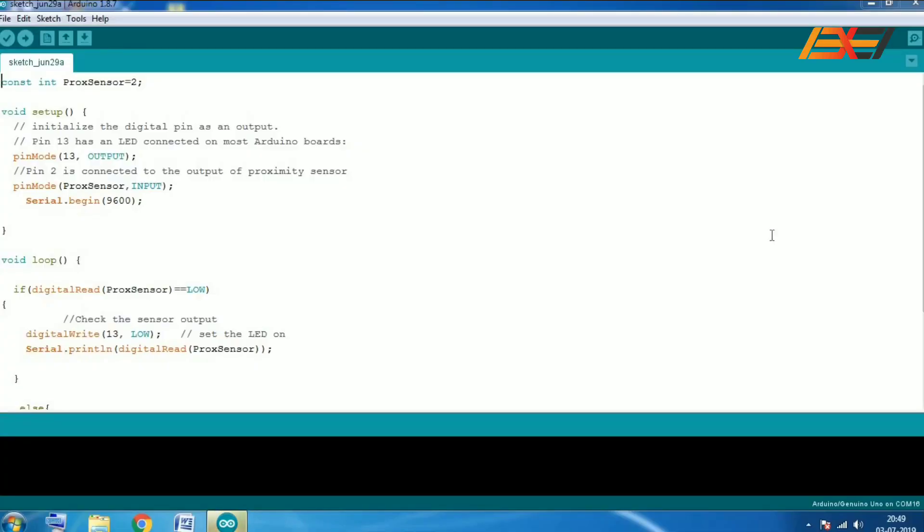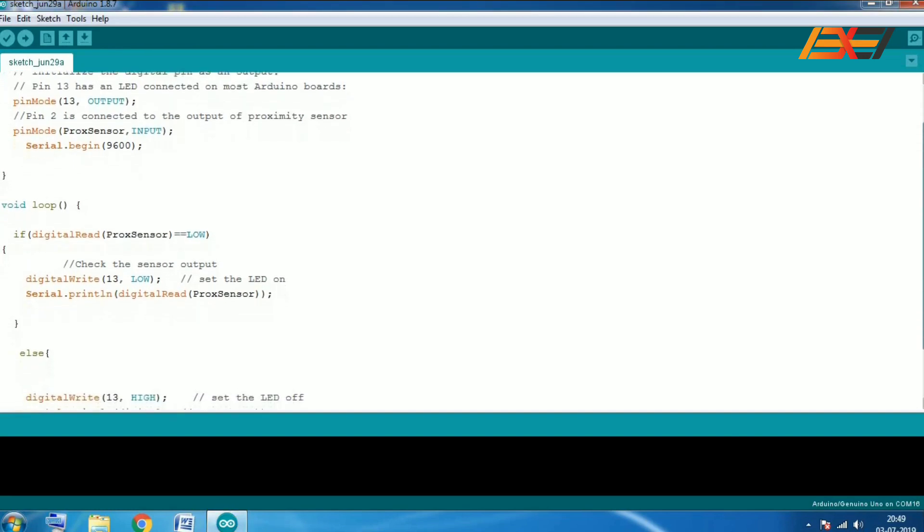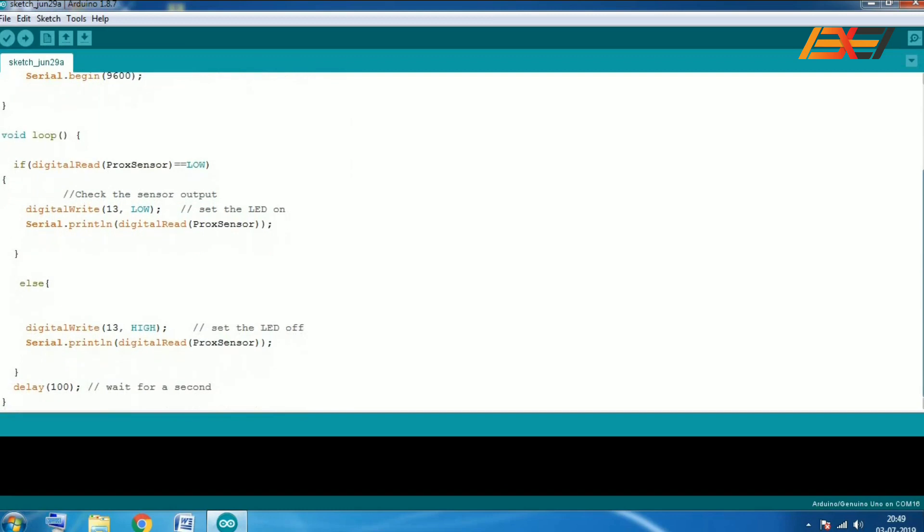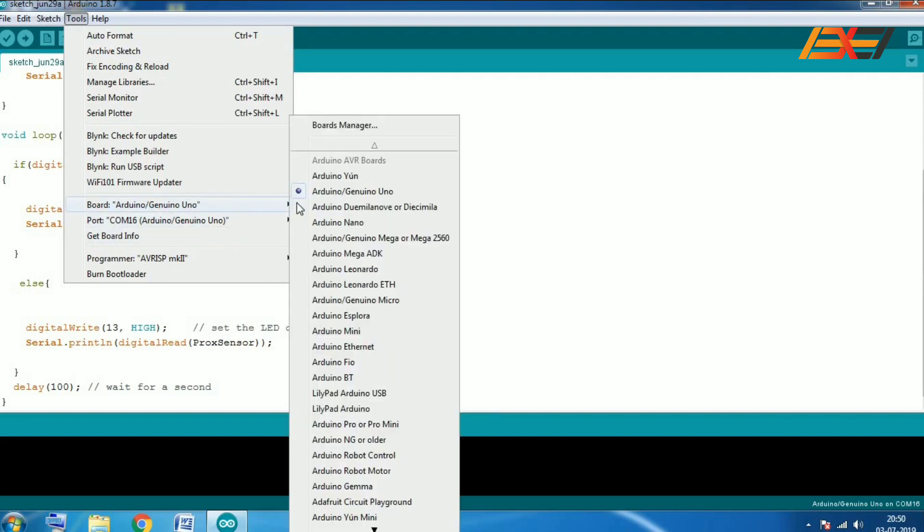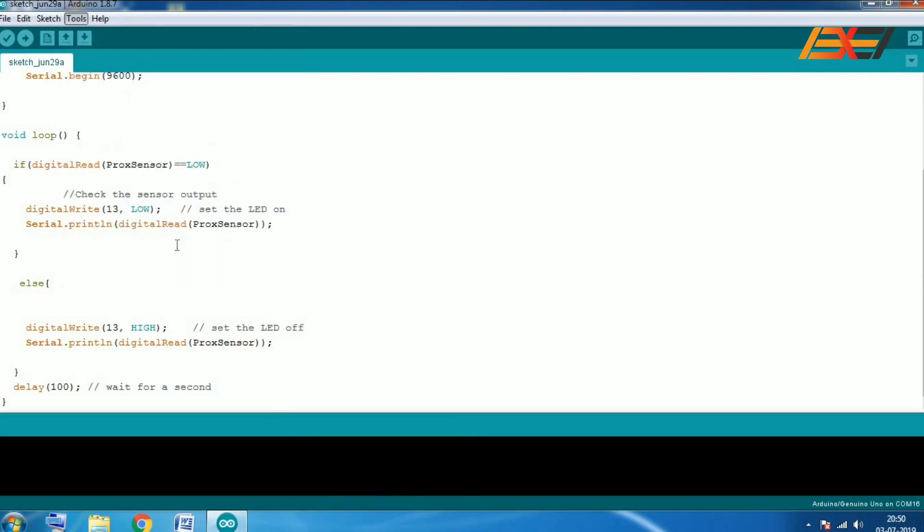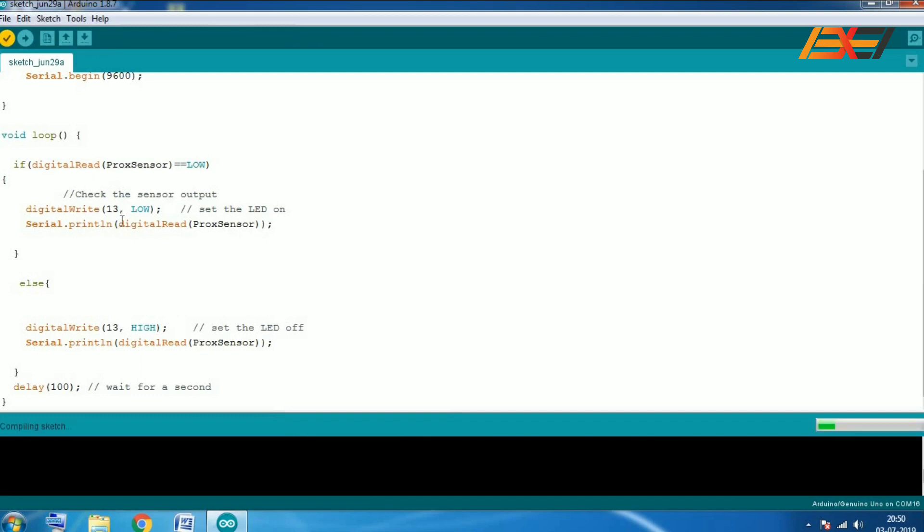Now you need to upload this code to your Arduino board. Go to tools, select the port, then select the Arduino UNO board. And after that verify this code.